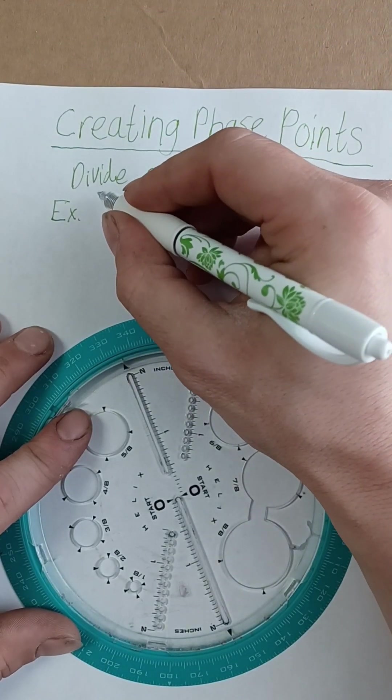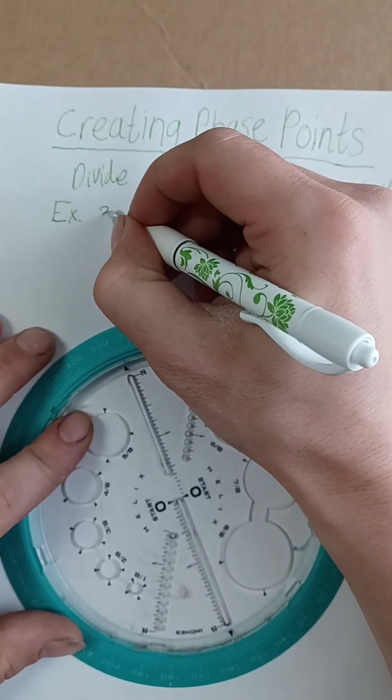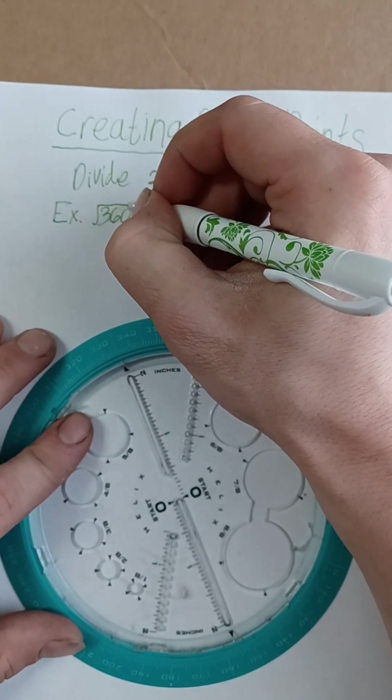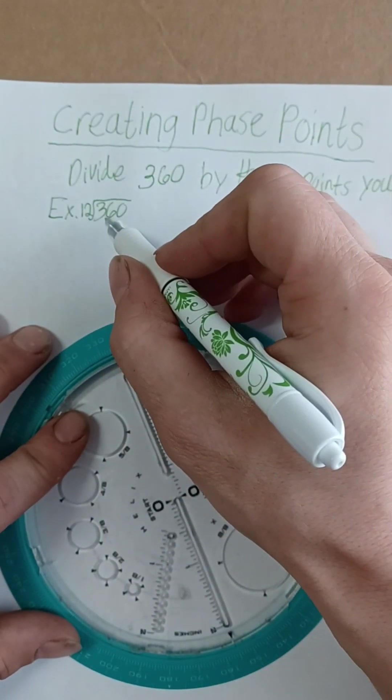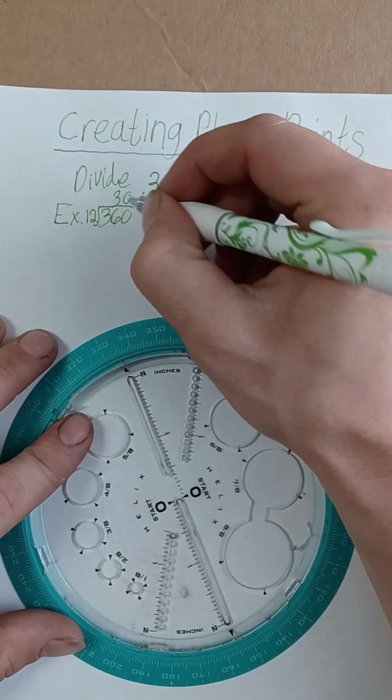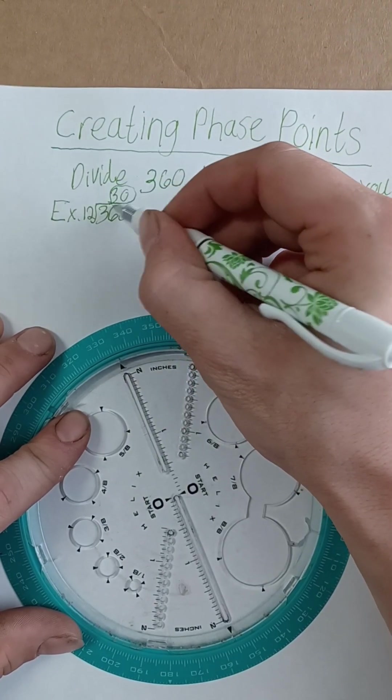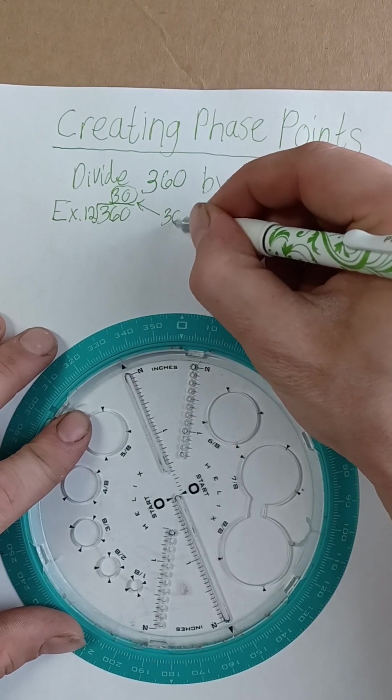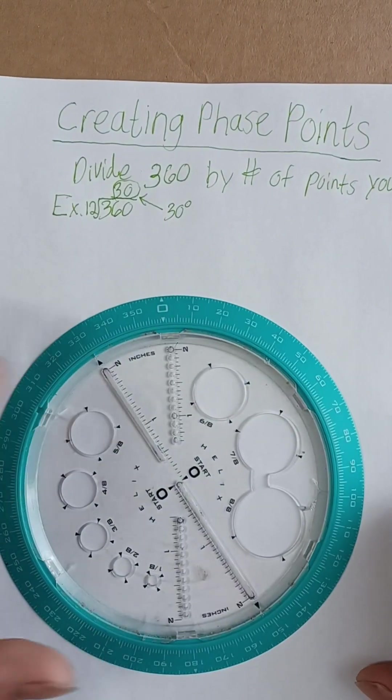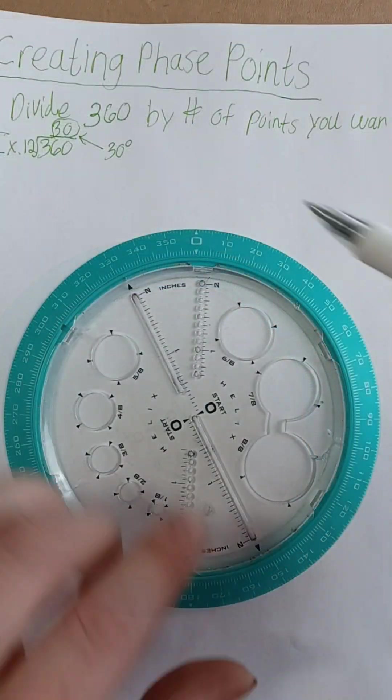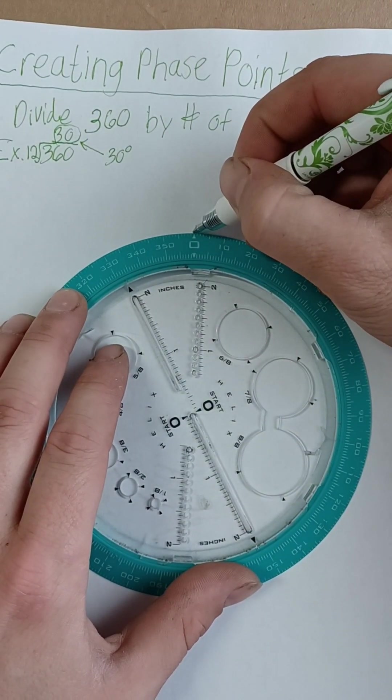Alright so the first thing you want to find is your phase points. Now in order to find your phase points it's actually really easy to do. There is no resonant frequency to the coil so the coil is just being structured pretty much using basic algebra. Let's do 360 divided by 12 for instance. That's going to give me 30.